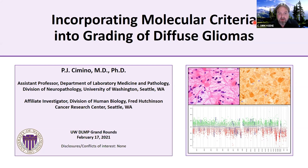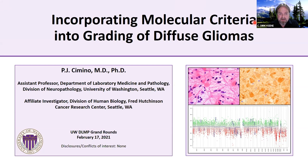We were lucky enough to recruit him back to Seattle. PJ started here as an acting assistant professor and is now an assistant professor and affiliate investigator at the Hutch, focusing on glioma biology. He's had a number of small grants as an early faculty member and is also the recipient of a K award. He has published over 50 PubMed-indexed manuscripts that he's co-authored since he's been here. Very prolific and with a bright future.